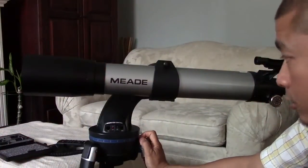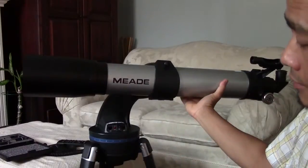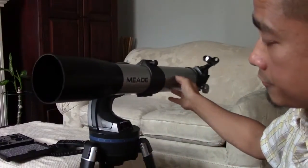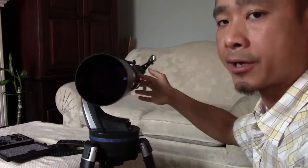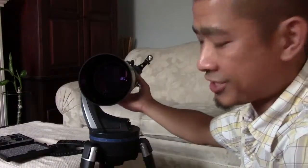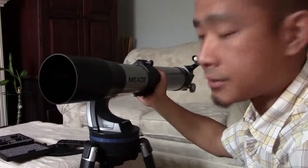Now this telescope has a focal length of 800 millimeters and an aperture diameter of 90 millimeters, giving it a focal ratio of 8.8. That would be considered a slow focal ratio, which isn't a bad thing. It just means it's going to be more forgiving on eyepieces.